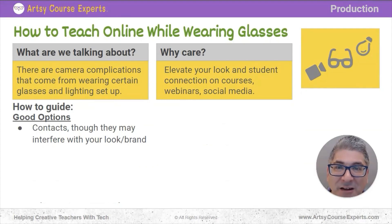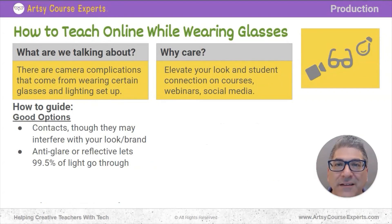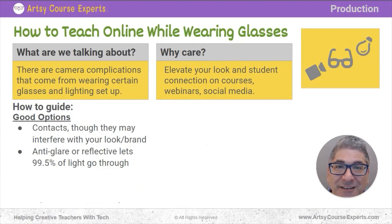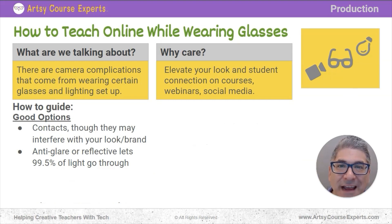Contacts are easy to wear and low cost. The next option is anti-glare or anti-reflective glasses. What this means is you're going to see less light on your lenses, because these anti-glare glasses actually let light go through your glasses as opposed to bouncing back onto the camera.